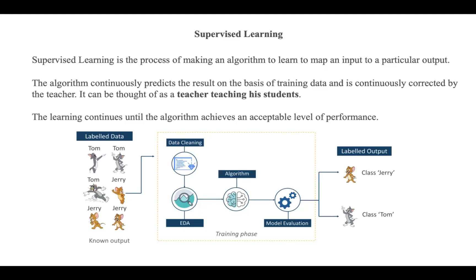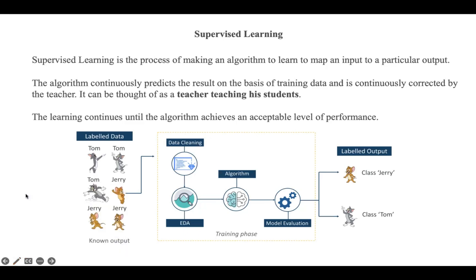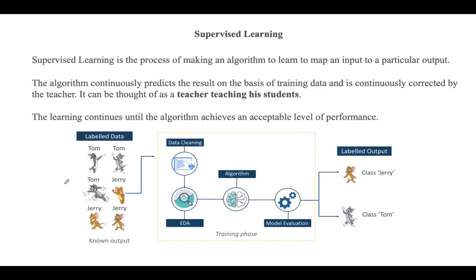The labeled dataset is the training dataset. For example, we are feeding the machine images of Tom and Jerry, and our goal is for the machine to identify and classify the images into two categories — Tom images and Jerry images. The training dataset fed to the model is labeled, with labels given for every image.